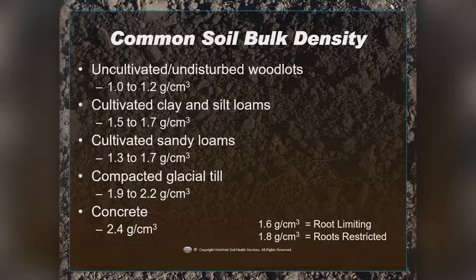If you take an uncultivated woodlot at about 1.2 to 1.3 and divide 1.3 into 2.65, that's roughly about 50% solid material, meaning the other half is pore space. If you look at compacted glacial till at 2.2, it's about 85% solid material and only 15% pore space. Once we get above about 1.6 grams per centimeter cubed, it becomes root limiting, and above 1.8, roots are definitely restricted — though this varies by soil texture.